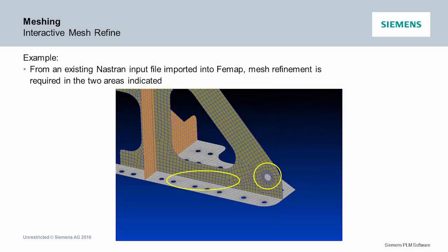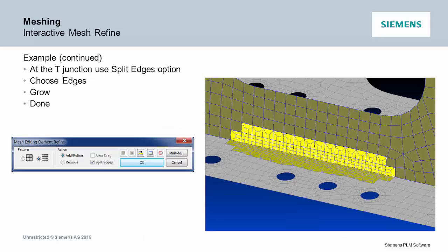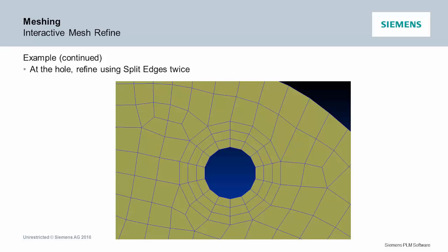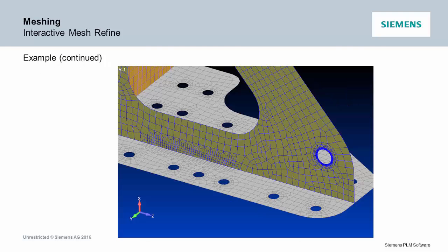T-junctions, whatever's connected, stays connected. In a similar model, you pick a region and grow it out wherever you want. There's also a drag selection — you can sweep the mouse around and highlight elements to refine. If it's an orphan mesh with no geometry, it doesn't do any projecting. But if it does have geometry, it will project and keep everything smooth, so you can quickly do really nice mesh refinements.